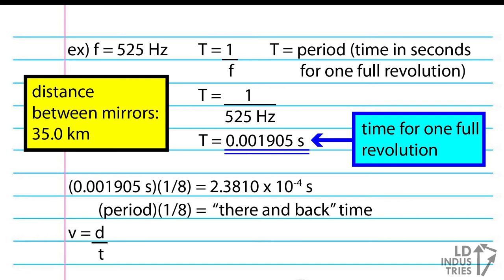Finally, we can use the uniform motion formula. The total distance will be 70,000 meters, since the light moved 35 kilometers, or 35,000 meters one way and 35 kilometers back the other way. And we're going to use a time of 2.3810 times 10 to the negative 4 seconds.